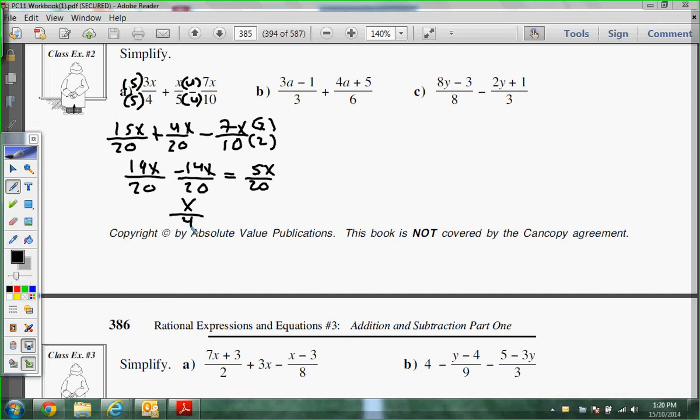5 over 20 is 1 fourth. 1x over 4. And just so you understand, these are the same. If the book has this, 1 fourth x is the same.